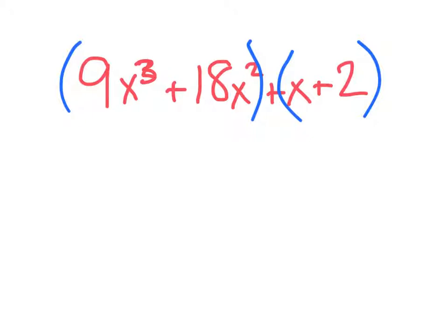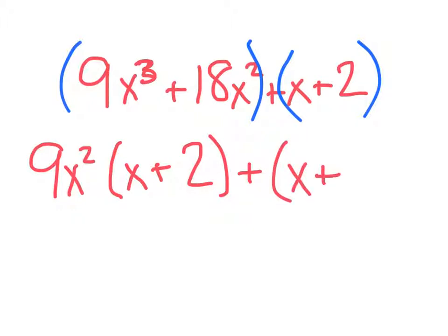I notice that 9x³ + 18x² have 9x² as the common term. So we have x, in order to get x³, plus 2. And then this one is just x + 2. You just go ahead and bring it down because there's nothing in common, right?